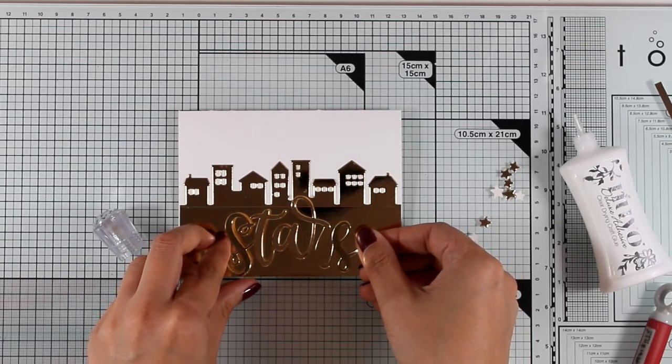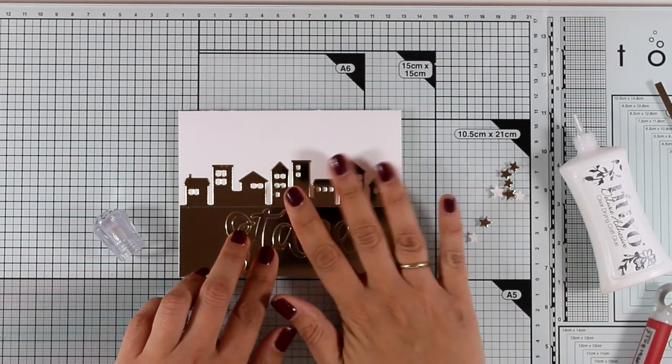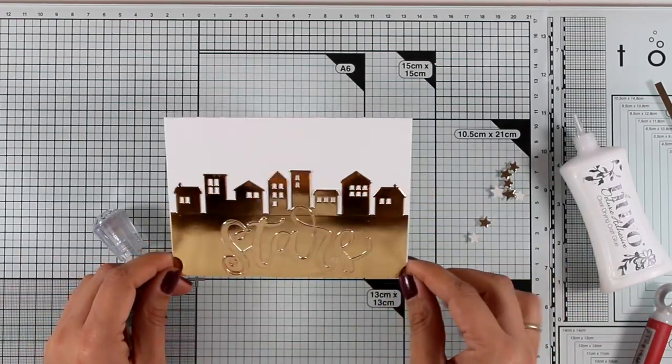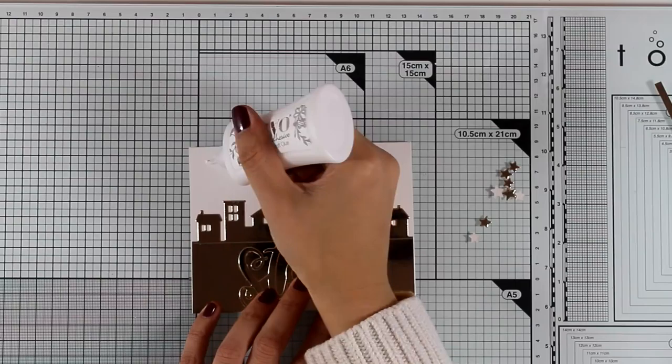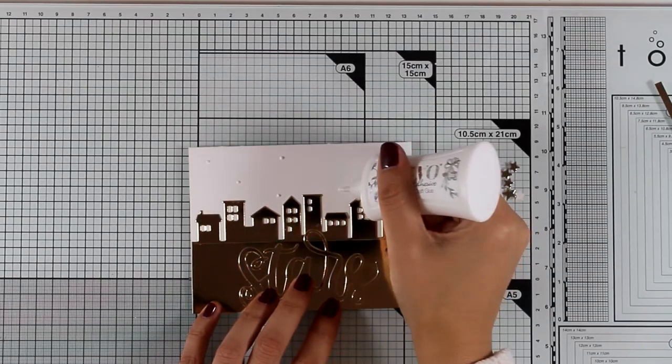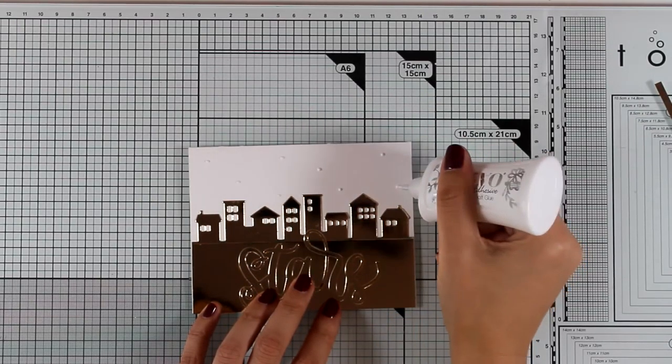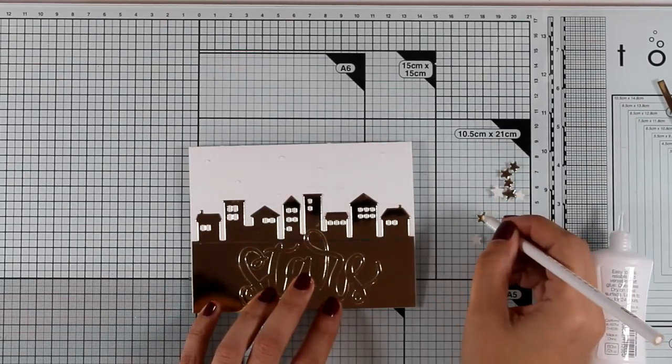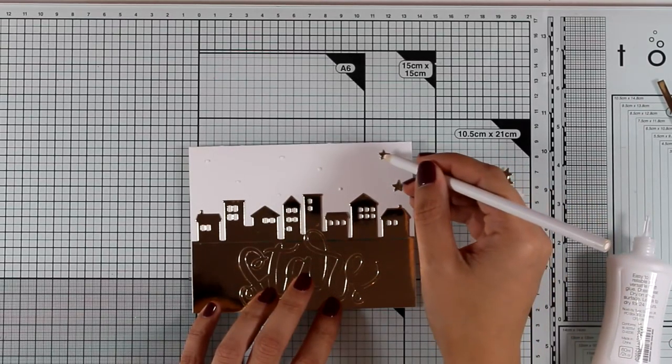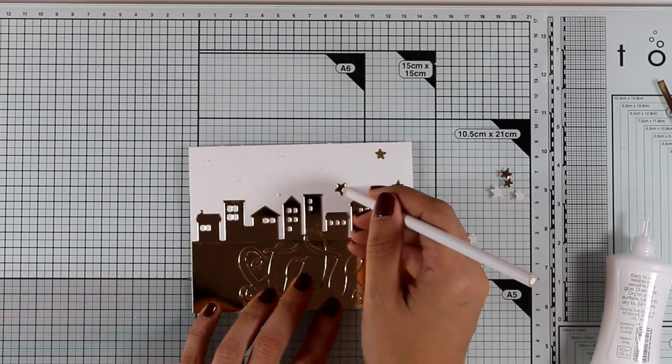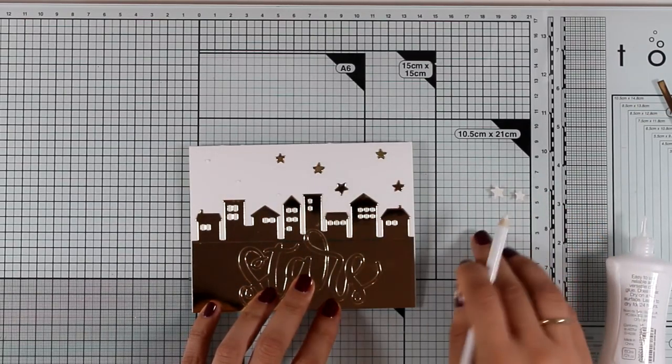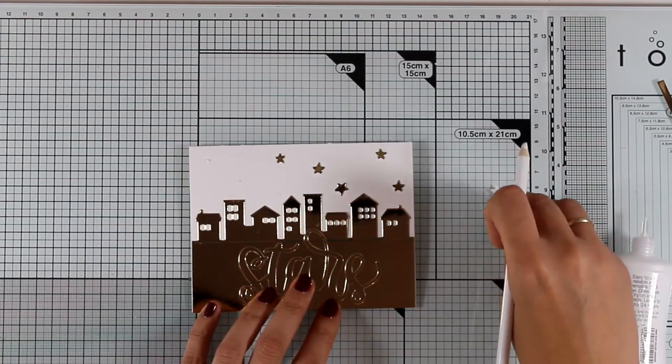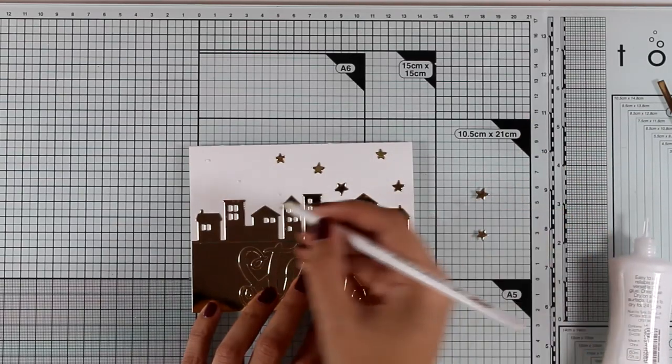I am adding some tape adhesive at the back of my buildings. I'm going to place it at the bottom of my card base and that's a standard card that's four and a quarter by five and a half. On top I glued the die cut that reads 'stars' and now with my white glue I'm adding some dots at the sky and this is where I'm going to stick the little stars that I have die cut. I just love the combination of white and gold together. I feel like they always give a lovely elegant card.